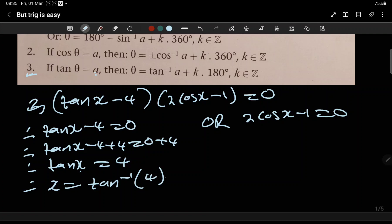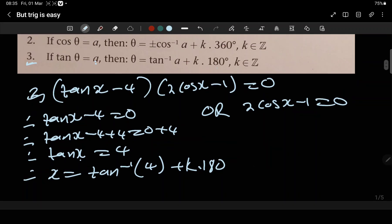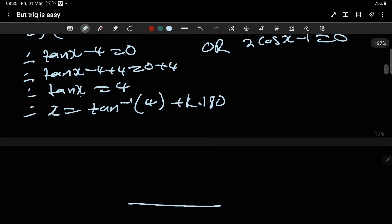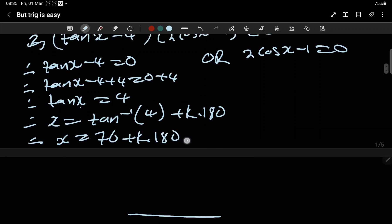Plus k times 180 degrees, where k is an element of integers. From these principles, I hope you know what integers are: zero and... Let's press the calculator: shift, tan, four. This is 76.96, or we could just say 76 plus 180k, where k is an element of integers.